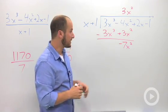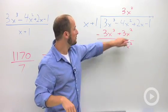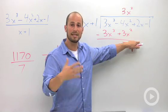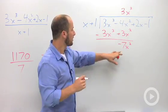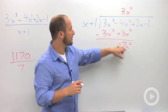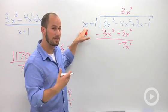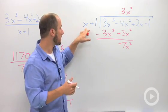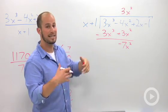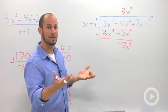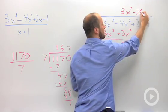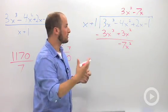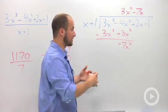That's the next term we want to get rid of, negative 7x squared. If you want to bring this down, you can. You don't have to. Just remember that we need to include it next up when we subtract. So we need to get rid of the negative 7x squared with our leading term of x. So we need to multiply our x by negative 7x in order to cancel it out. Negative 7x. And then we just want to multiply and subtract once again.